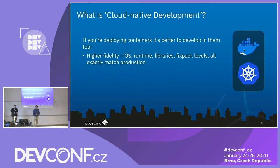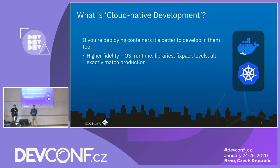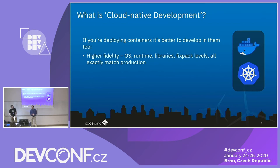So what's cloud native development? We're talking about applications running within containers that are intended to deploy to a cloud environment. When you're doing development in containers, the main benefit is that you're actually running in a container which contains your stack of runtimes, libraries, fix packs, and any software that's needed — basically the same type of environment as your production. Once you complete development, you can be fairly sure it will work in production as well.